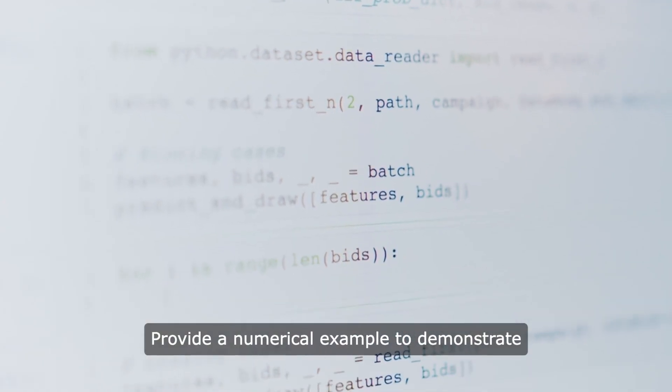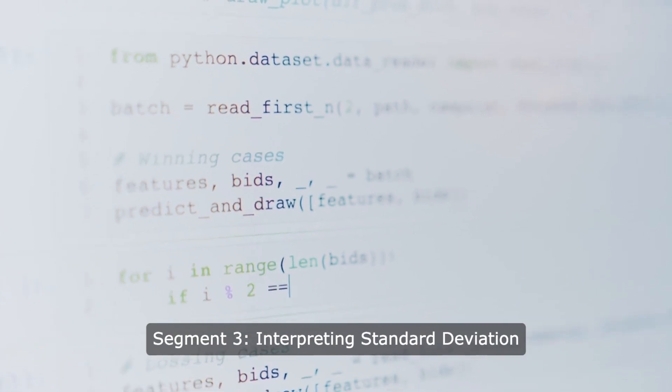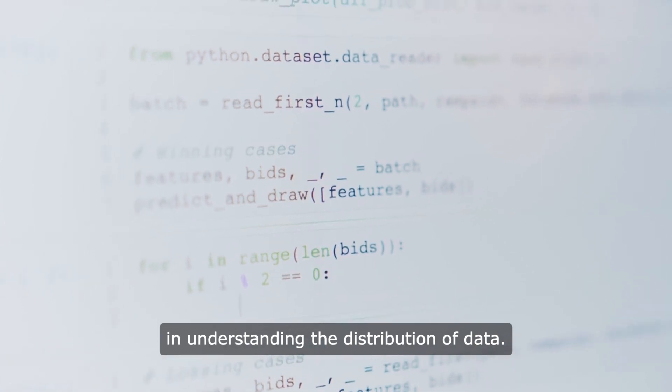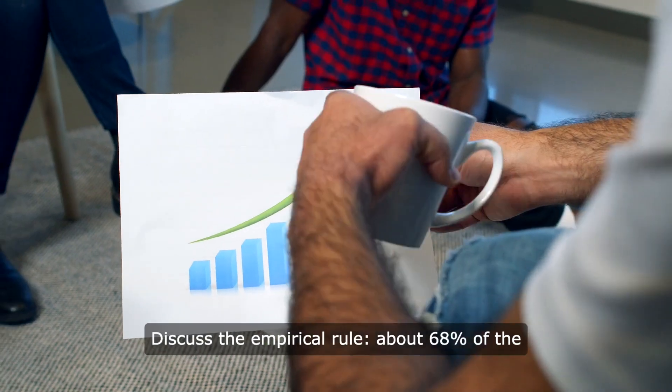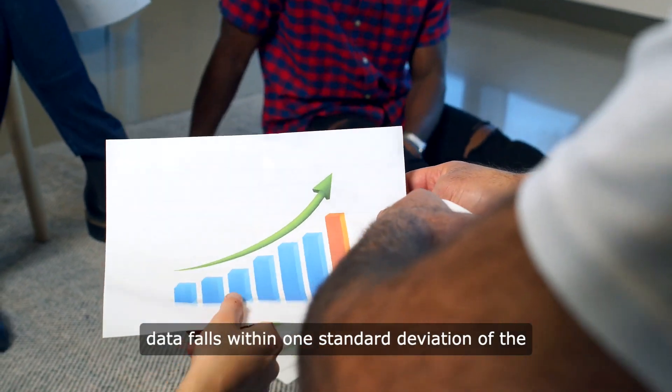We'll provide a numerical example to demonstrate the calculation process. Segment three: Interpreting Standard Deviation. Standard deviation helps in understanding the distribution of data. The empirical rule states that about 68% of the data falls within one standard deviation of the mean.